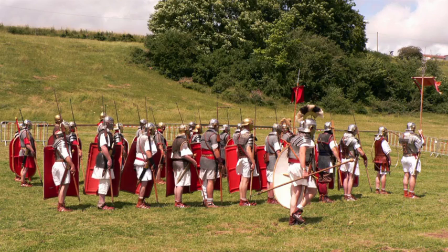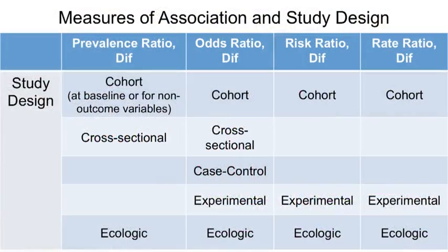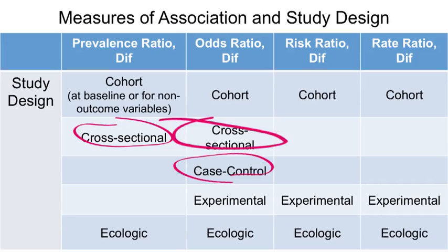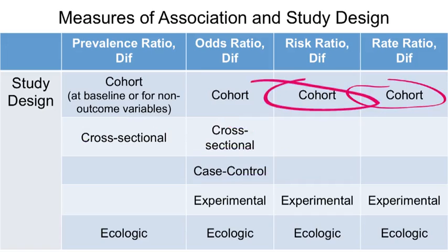All the measures of association we have covered can be estimated in the cohort study design. However, some other study designs cannot directly calculate risks and rates as you can in the cohort. Here is a table illustrating the measures of association commonly used for different study designs. Prevalence and odds ratios and differences are more commonly found with cross-sectional and case-control studies, while risk and rate ratios and differences are more commonly used with cohort studies. Risk and rate ratios cannot be directly calculated from case-control and cross-sectional studies.